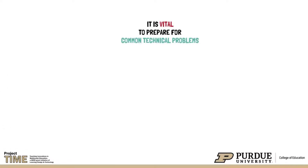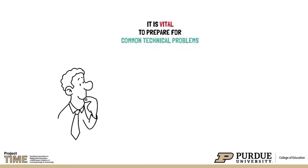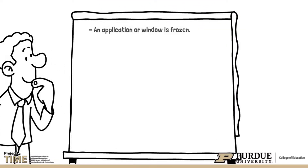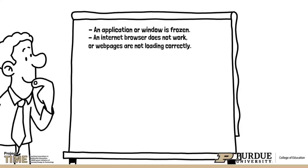While developing strategies to prevent problems is necessary, it is also vital to prepare for common technical problems that might arise. Some of the most common technical problems in blended and online learning are: when an application or a window is frozen; an internet browser does not work or web pages are not loading correctly; it is impossible to log in; and Wi-Fi is not working.